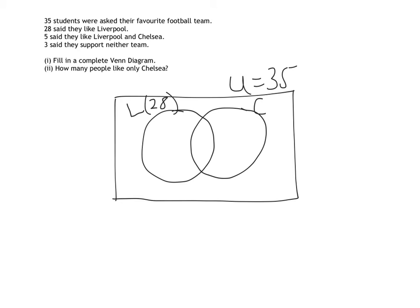We're told that 5 people said they liked Chelsea and Liverpool, so as we did in our last one, that should go straight into the middle of our circle. And we're also told that 3 support neither team. So again, we should hopefully know that the 3 goes on the outside.